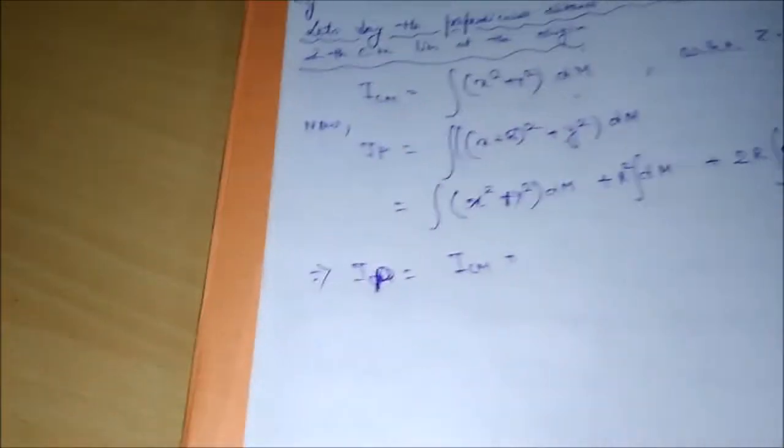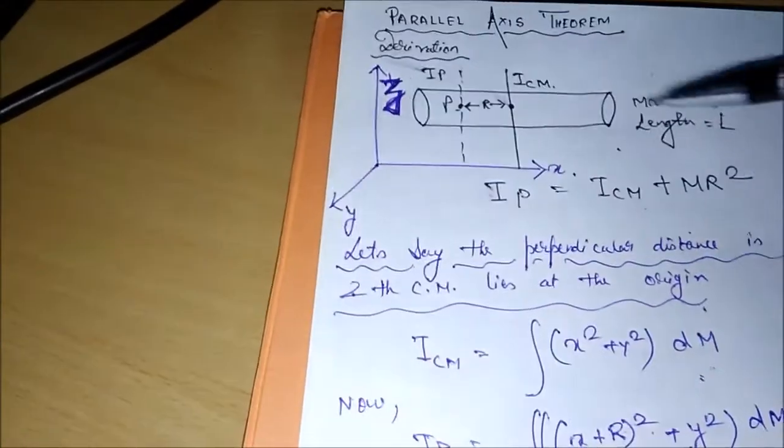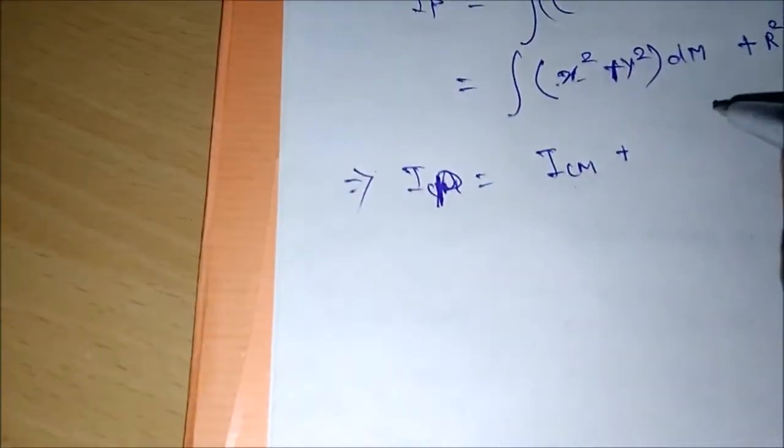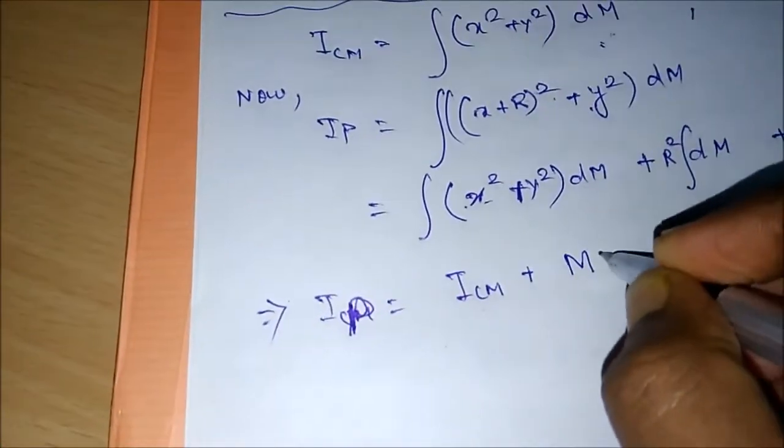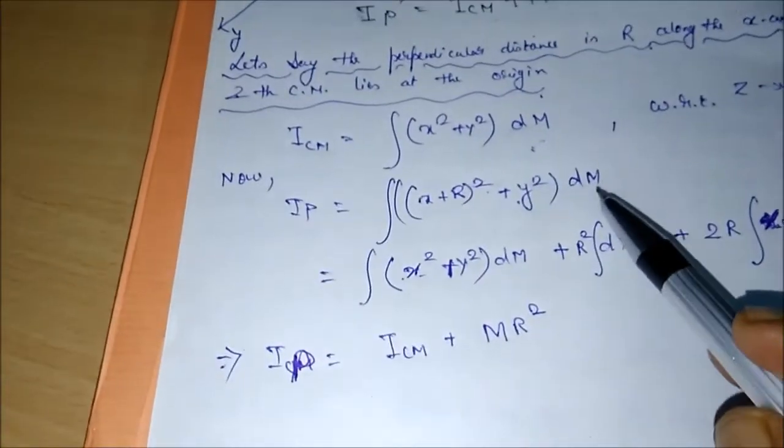Now, plus R² dM. Can you tell me what is this thing? Integration of dM is what? The mass. dM is a small unit mass. We are integrating this over the entire length, so what we will get is actually the M, the actual M. So I can say MR², capital M, R².